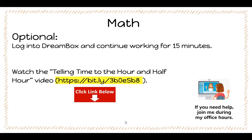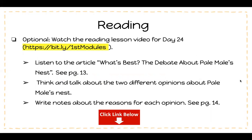Remember, if you need help join us in our office hours. For reading, you can watch the reading lesson video for day 24. You can either listen to the article or you can read it yourself. The article is called "What's Best? The Debate About Pale Male's Nest" and it is on page 13 of your packet. After you have listened to or read the article, think and talk about the two different opinions about Pale Male's Nest. Then you're going to write notes about the reasons for each opinion — this worksheet is on page 14. Remember, an opinion is something that you think. My opinion about colors is that pink is my favorite color, but my opinion may be different from someone else's opinion.